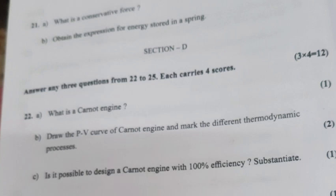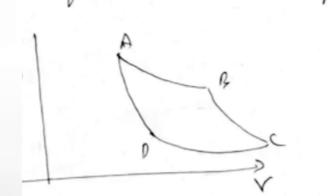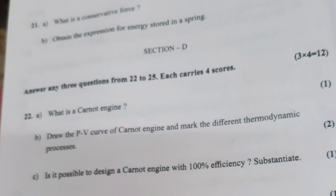Question 22a: What is a Carnot engine? 22b: Draw the PV curve of a Carnot engine and mark the different thermodynamic processes. 22c: Is it possible to design a Carnot engine with 100% efficiency? Answer 22a: A reversible heat engine operating between two temperatures. 22b: Processes — (B) Isothermal expansion, (C) Adiabatic expansion, (D) Isothermal compression, (A) Adiabatic compression. Answer 22c: No. Efficiency η = 1 − Q2/Q1. For η = 1, Q2 must be 0, which is impossible.